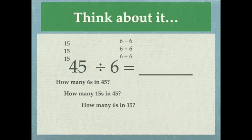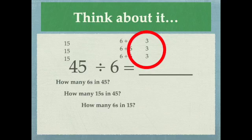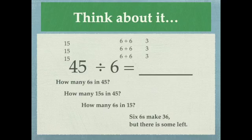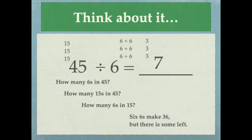Six plus six is 12, and there are three more to 15 — that's one group. Six and six are 12, and three more to the next 15. Six and six are 12, plus three more to the last 15. I can make another group of six here, and another group of six here. Six sixes make 36, but there are a few left — seven times six is 42, with three left over. So how many sixes fit in 45? Seven and three sixths — which is seven and a half — fit in 45.